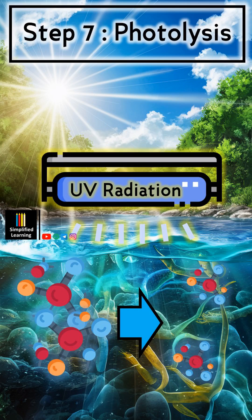The next step is photolysis. Sunlight, particularly ultraviolet radiation, can break down certain pollutants through a process called photolysis. This process can degrade organic compounds and some chemical pollutants, reducing their concentration and toxicity in river water.